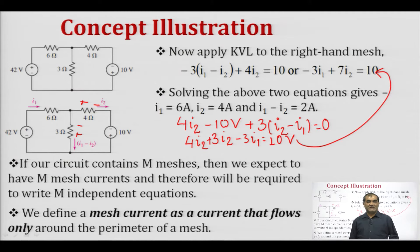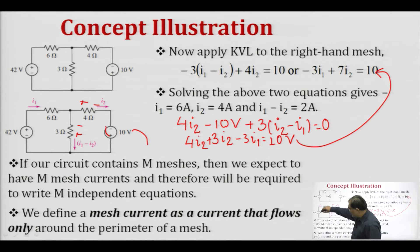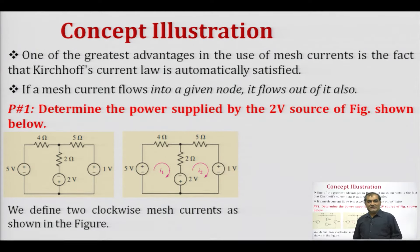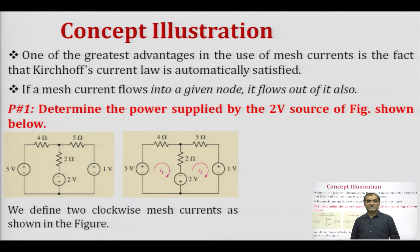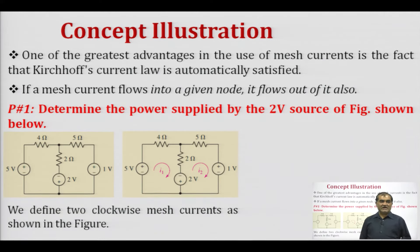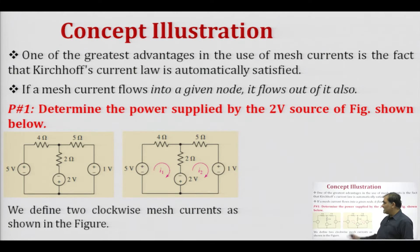If our circuit contains m meshes, we expect to have m mesh currents and will need to write m independent equations. A mesh current is defined as a current that flows only around the perimeter of the mesh. One of the greatest advantages of using mesh currents is that Kirchhoff's Current Law is automatically satisfied — if a mesh current flows into a given node, it also flows out of that node.